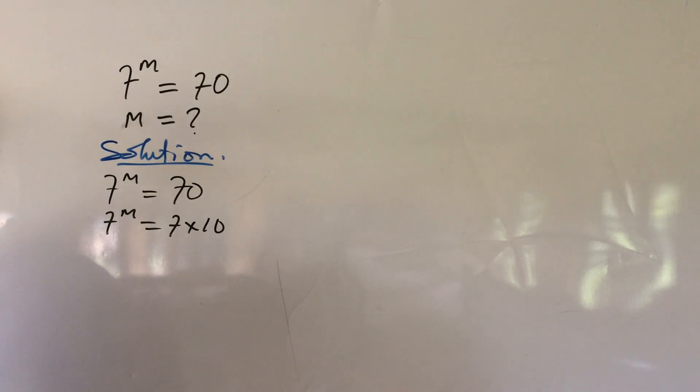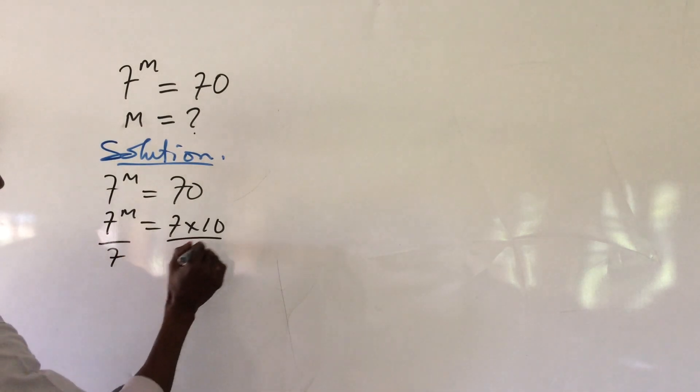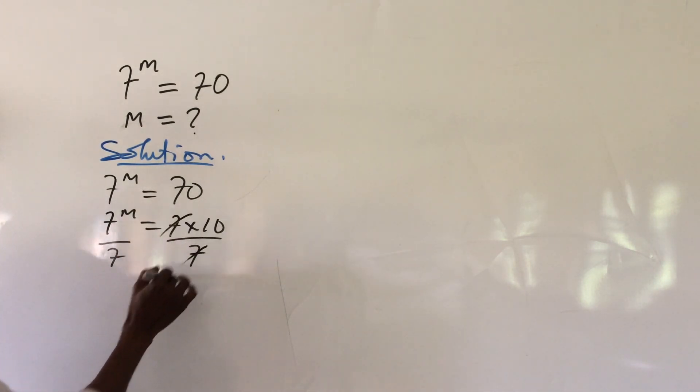Alright, let's divide through by 7. So if we decide to divide through by 7, we divide this through by 7. This and this will go.